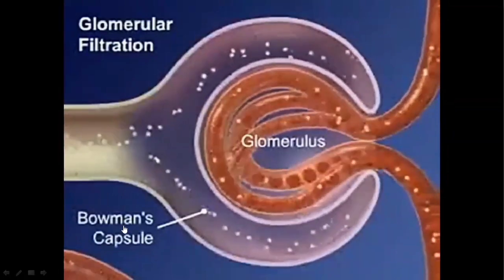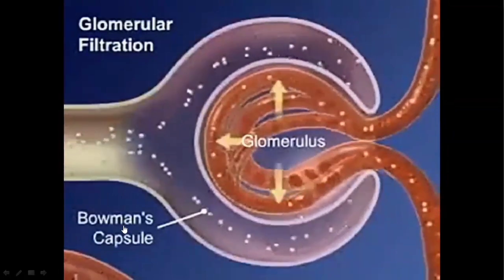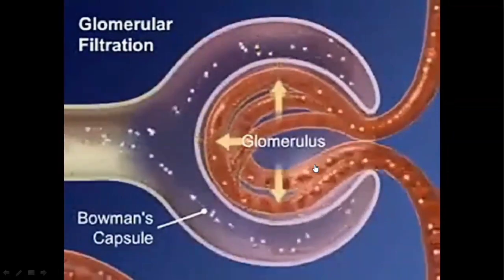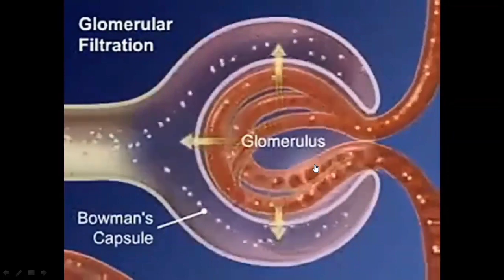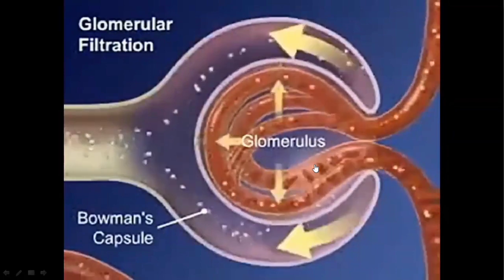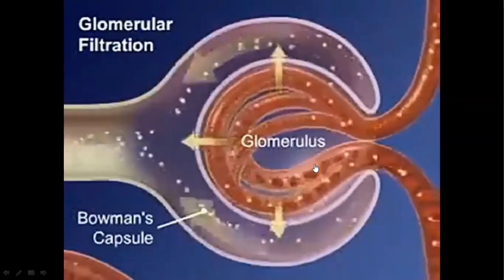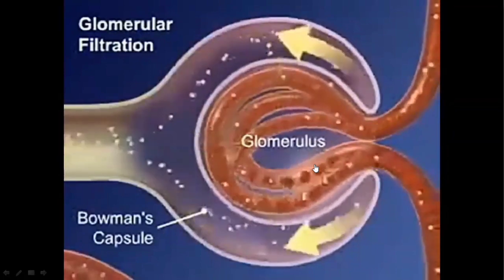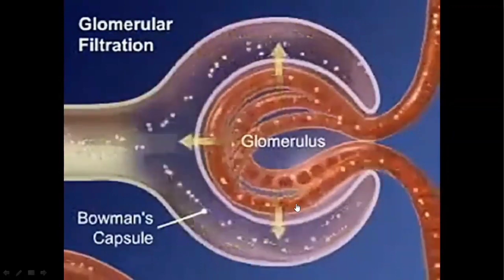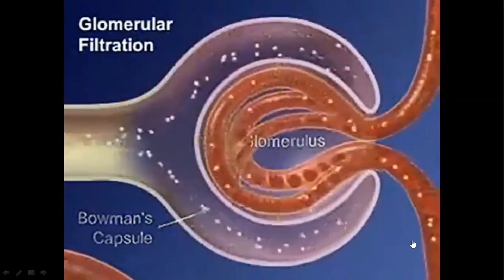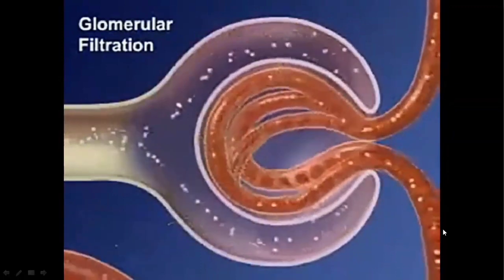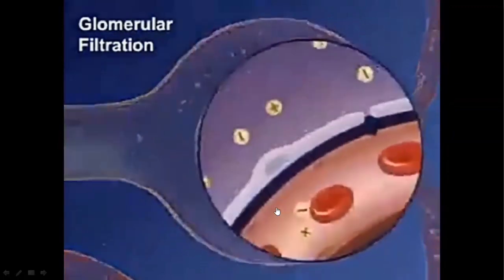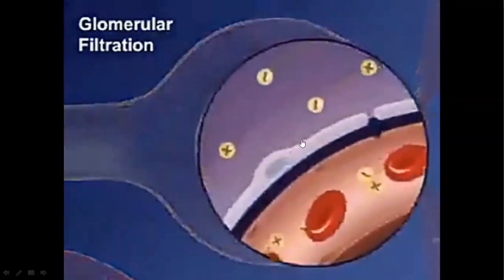The first part of the nephron is the renal corpuscle, which consists of the glomerulus and Bowman's capsule. These are the main filtration structures involved in the process of filtration and in the formation of filtrate. Blood coming from the afferent arteriole divides into capillaries and then leaves through the efferent arteriole.